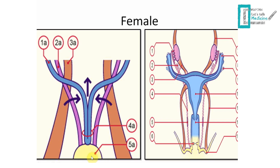The urogenital sinus in females shares some structures with males — it also gives us the urinary bladder and urethra — but additionally gives the lower one-third of the vagina, urethral and paraurethral glands, and the greater vestibular glands.